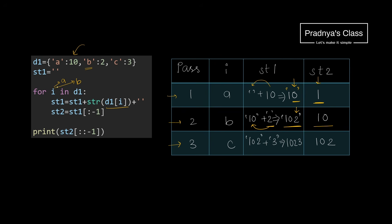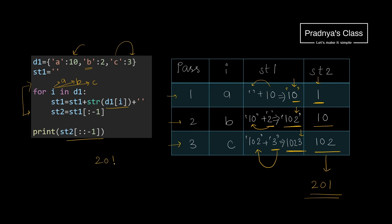In the same way, we proceed to the third pass. Now the key will be 'c'. The corresponding value is 3 and the previous string is '102', so the final string will be '1023'. Again removing the last character, st2 will be '102'. The loop is over because we have only 3 elements in the dictionary. Using slicing, we are reversing this string, so we will get '201'. This is the final output of this code: 201.